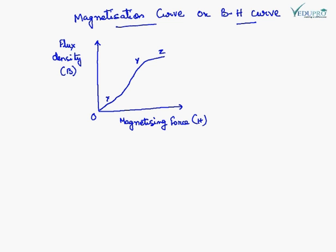The region OX shows the increase in flux density is very small. From X to Y, the flux density increases almost linearly with the magnetizing force. The curve between Y and Z again shows the increase in flux density is small. The region beyond Z, after Z, the flux density is almost constant.